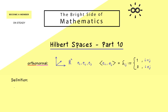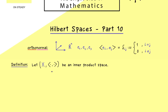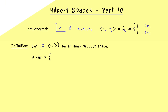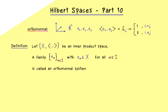It's not a problem at all to generalize that to infinite dimensions. The notion of an Orthonormal system makes sense in every inner product space, so for this definition we don't need the completeness of a Hilbert space yet. We consider a family of vectors e_alpha, where alpha goes through an index set capital I, which can be an infinite set. We call this collection an Orthonormal system (ONS) if e_alpha with e_beta in the inner product gives the Kronecker delta.